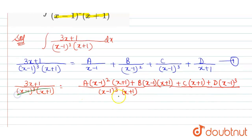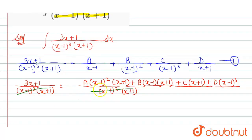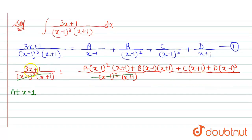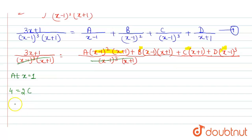After cancelling (x−1)³(x+1) from both sides, we substitute x = 1 to find C. At x = 1: 3(1) + 1 = 4, and the remaining term is C times (1+1) = 2C. So 4 = 2C, giving C = 2.